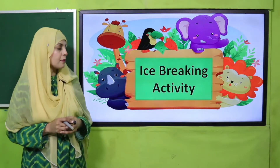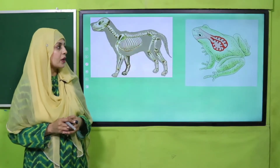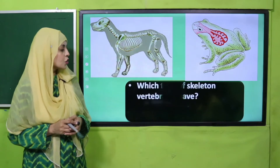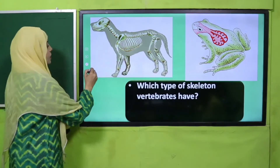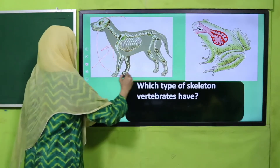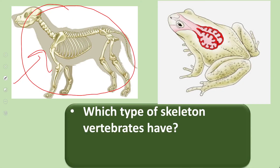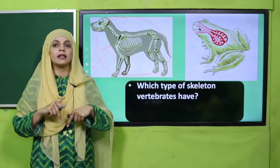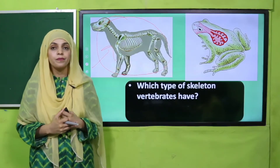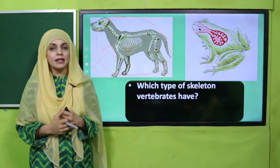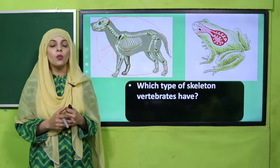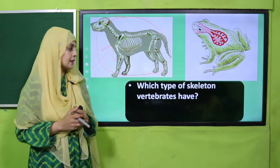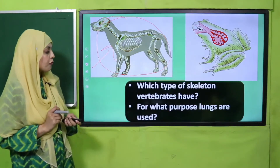Now is the time for an activity. Look at the pictures very carefully and then answer. Which type of skeleton do vertebrates have? This is a vertebrate and here you can see its skeleton — it is inside the body. When the skeleton is inside the body, what is it called? It is called an endoskeleton. So vertebrates have an endoskeleton.